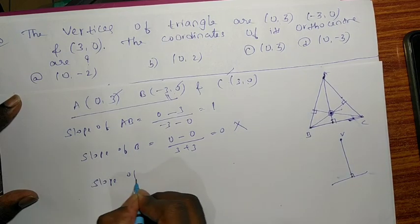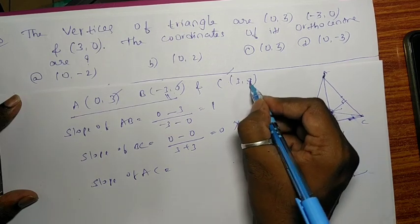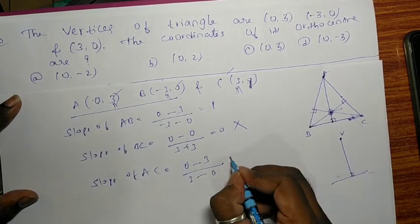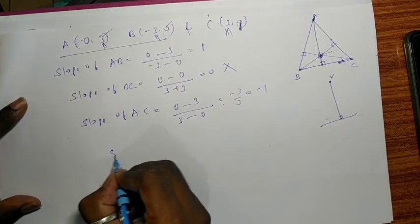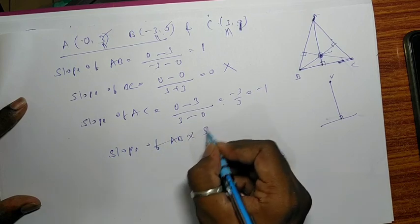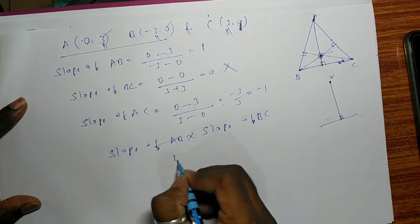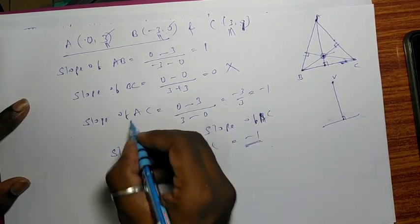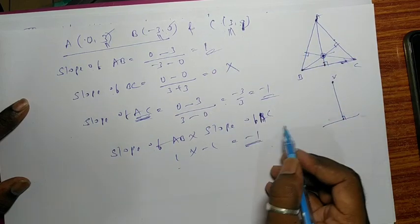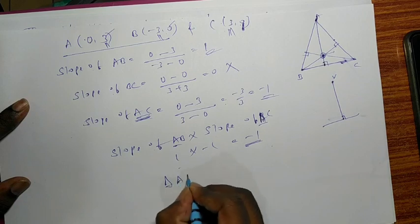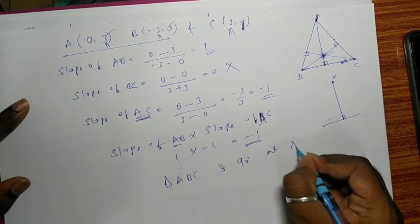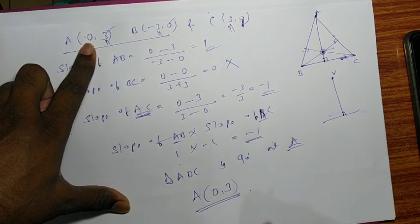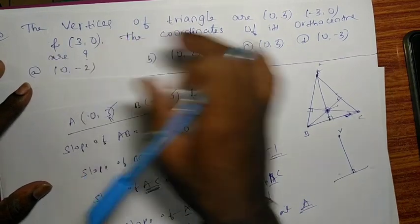Slope of AB: (0 - 3) divided by (-3 - 0) equals -3 divided by -3, which is 1. Slope of BC: (0 - 0) divided by (3 - (-3)) equals 0 divided by 6, which is 0. Slope of AB times slope of BC: 1 times 0 equals 0, not -1. Wait, checking again... Actually, the 90 degree angle is at A. The orthocenter coordinate is at A itself, which is (0,3), the coordinate of the orthocenter.